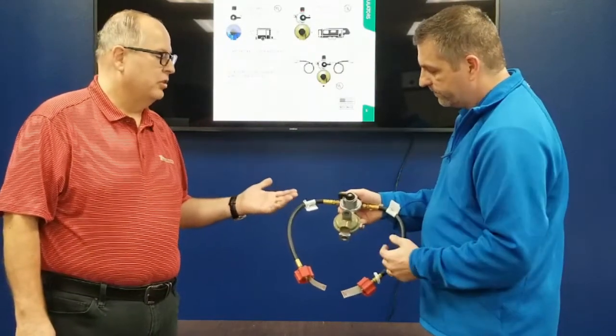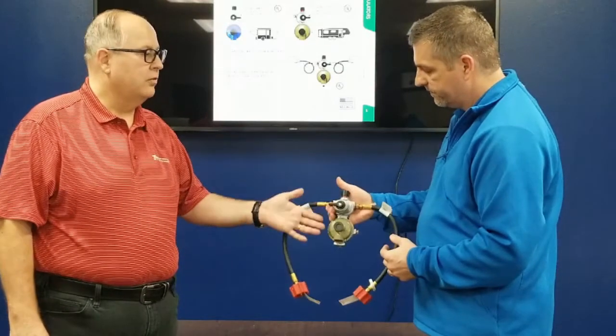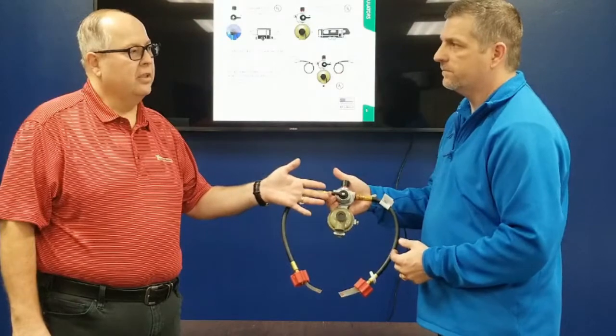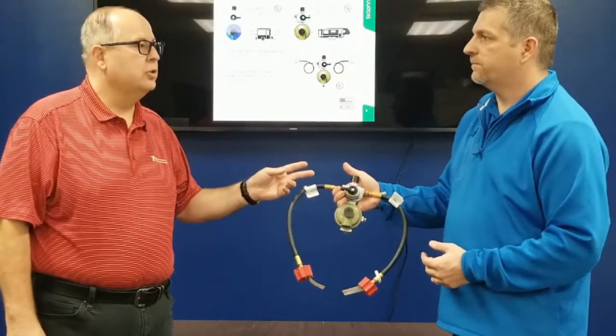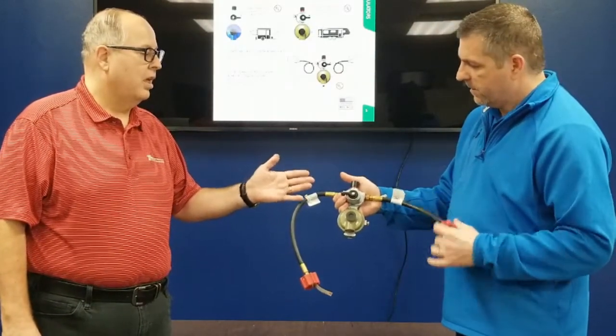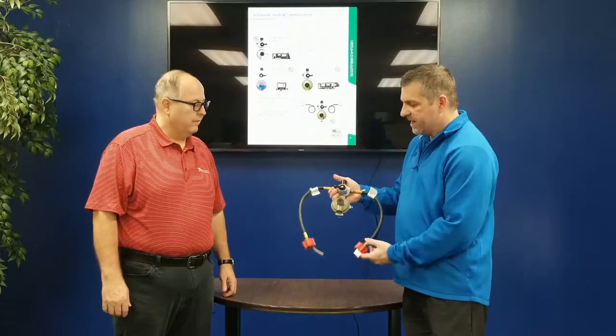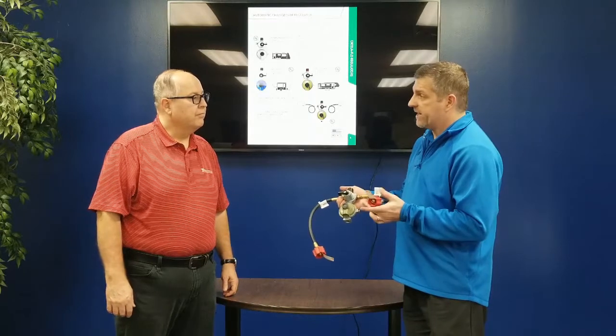Normally what you'd see, and we would have seen for decades, is a silver auto changeover regulator. The auto changeover regulator is used anytime there's two cylinders on the RV. So you definitely have two cylinders, you have pigtails attached, and typically you would see a green connection.